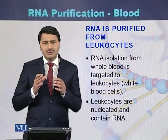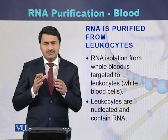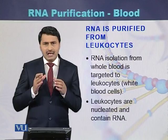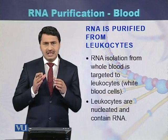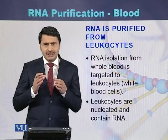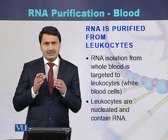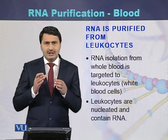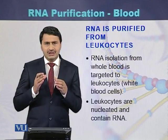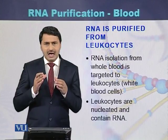RNA is purified from the leukocytes. Leukocytes are also called white blood cells. These cells are nucleated — they contain the nucleus, and within the nucleus there is genetic material, that is DNA and RNA. So while purifying the RNA, we should target the leukocytes because RNA is present in the leukocytes.